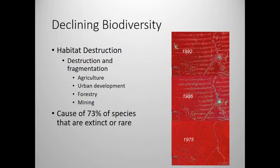The second biggest reason is urban development. Right now about 80% of Americans are living in urban areas, and all of those urban areas are getting bigger — we're taking more native habitat and turning it into cities and towns. Two smaller causes are forestry and mining. Forests do regrow, maybe not the same way, and mining is generally more localized. All four together have destroyed a lot of habitat and caused many species to go rare.